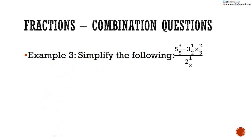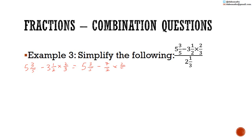So we work out the numerator and then divide by the denominator. We have to use BODMAS in the numerator, so we do the multiplication first before the subtraction. 3 and a half equals 3 multiplied by 2 is 6, plus 1 is 7. So we have 7 over 2 multiplied by 2 over 3.